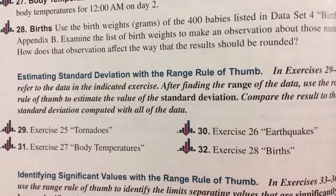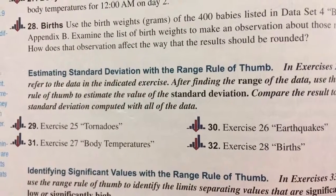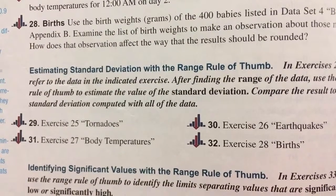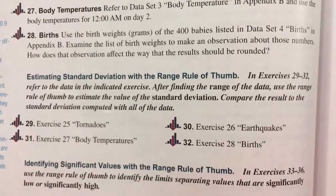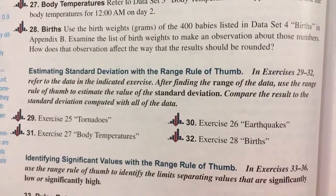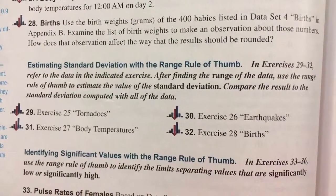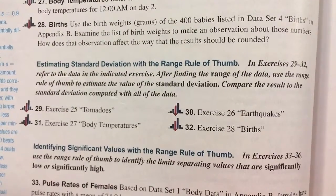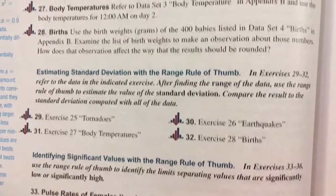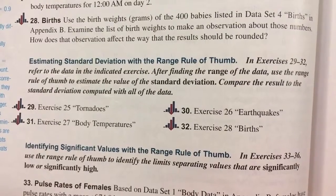Now we go to problem number 29. We're supposed to use exercise 25's data, which was tornadoes. The instructions say: estimate the standard deviation with the range rule of thumb. After finding the range of the data, use the range rule of thumb to estimate the value of the standard deviation, then compare the result to the standard deviation computed with all of the data.